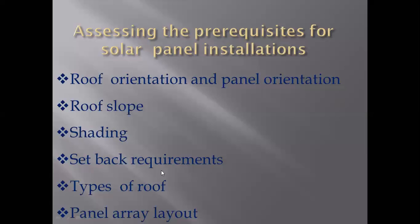Next are setback requirements. We have to set the location, roof orientation, slope, and shading for setback requirements. Next is type of roof. We have to set the roof orientation — landscape, portrait, vertical, south-to-north, south, west — and set the type of roof accordingly.